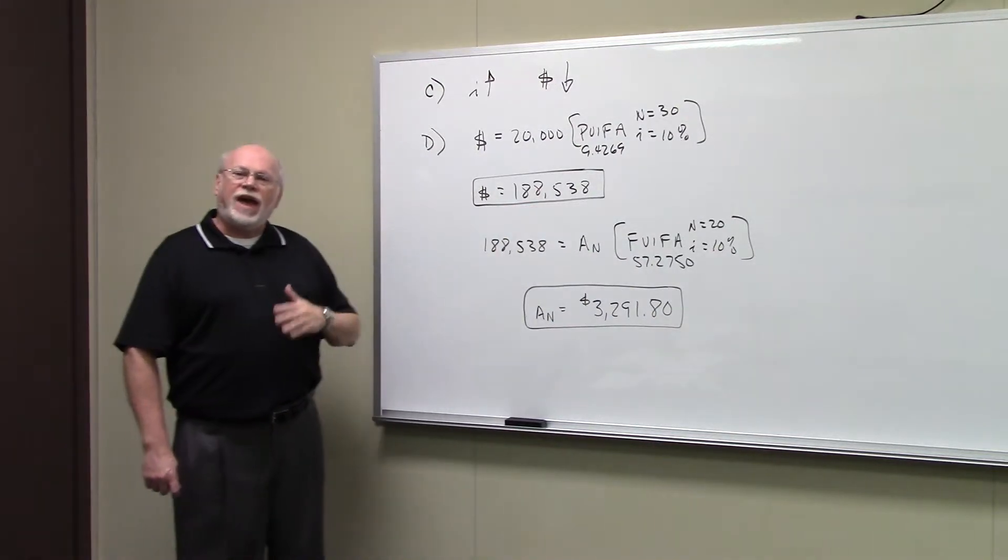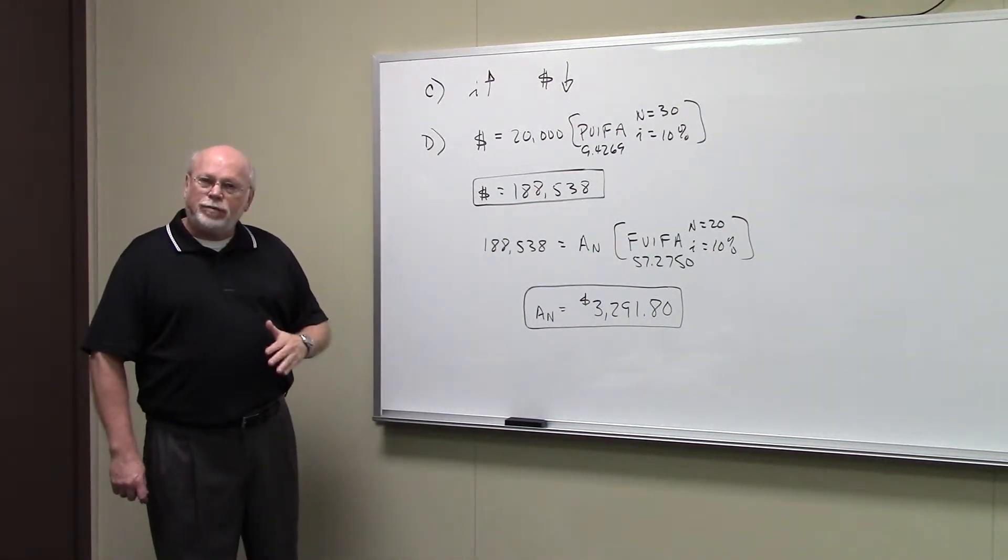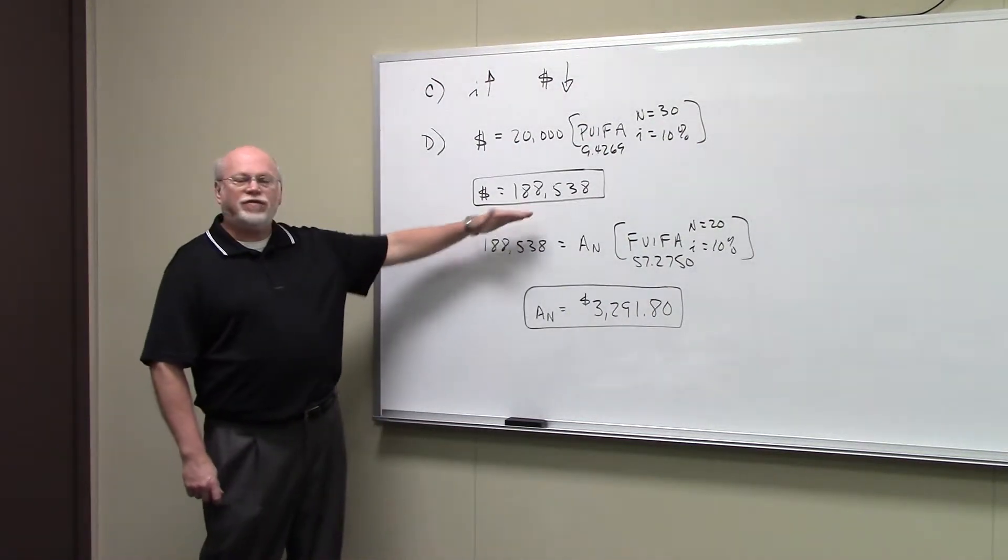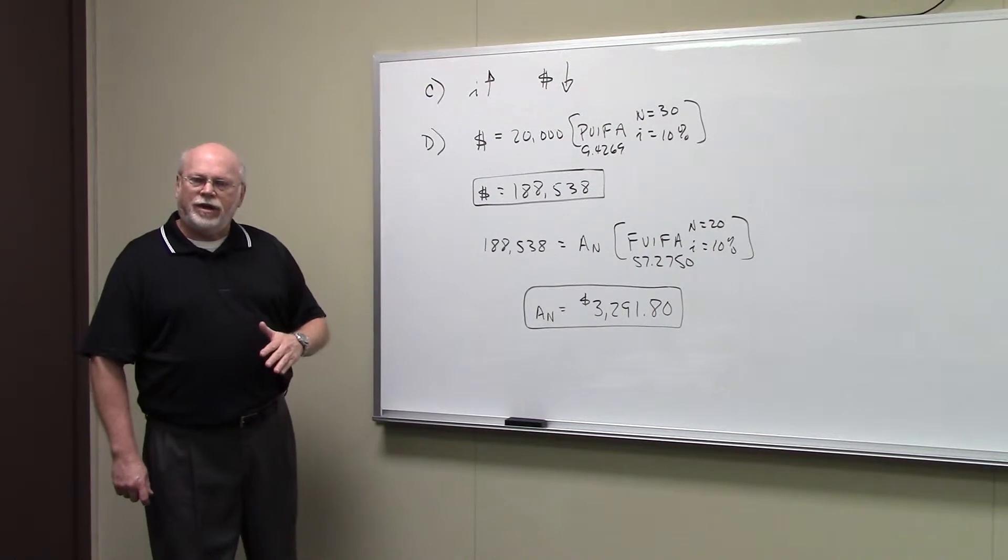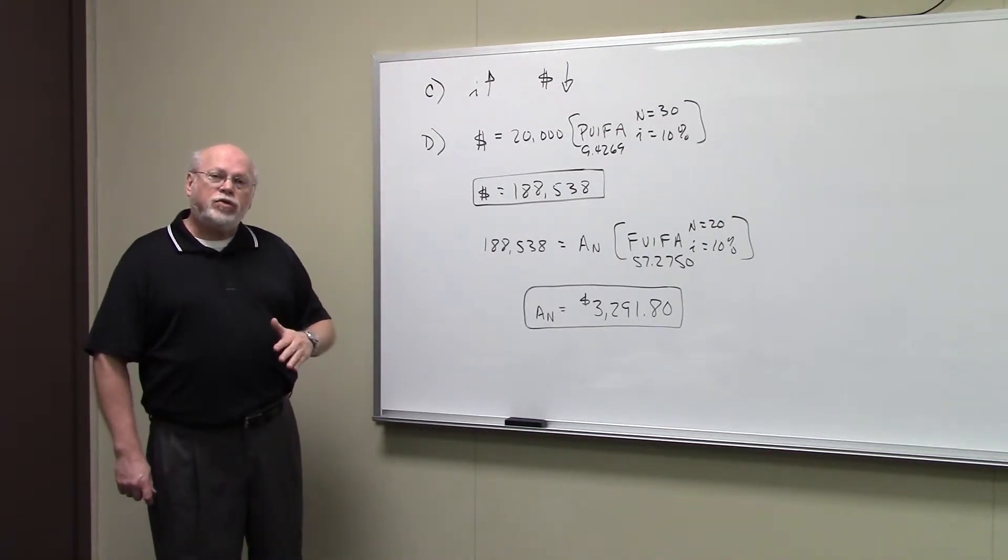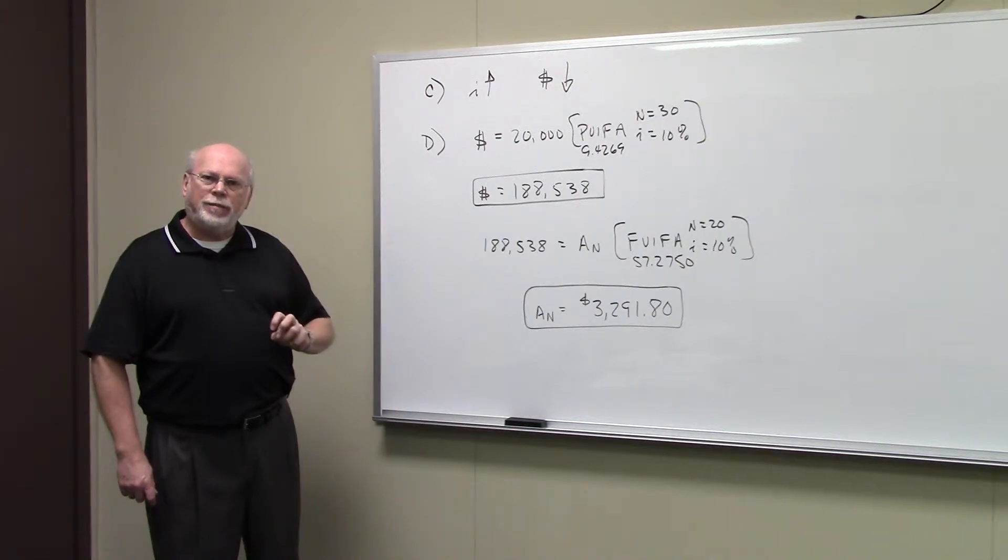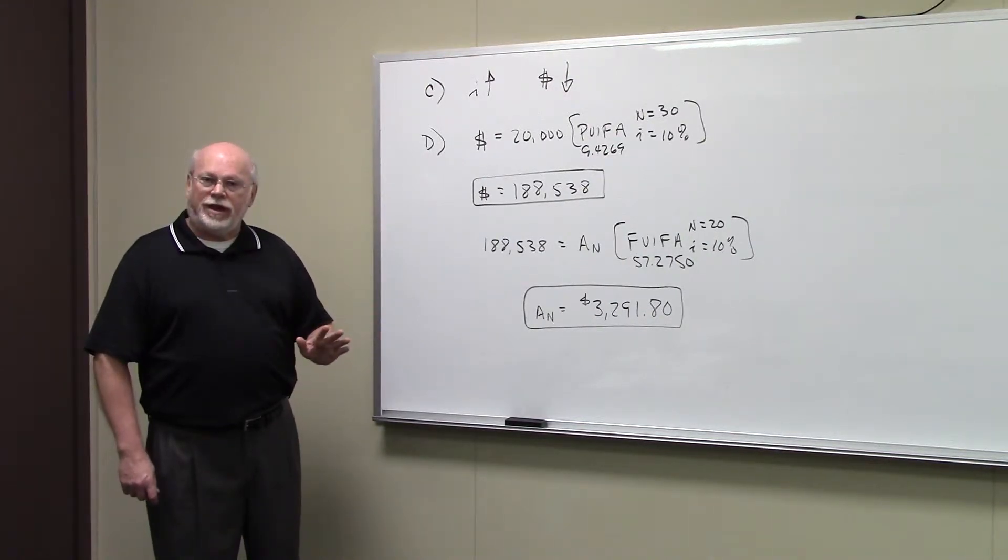So if at retirement we can earn 10% a year on our money, and we have $188,538 in the account, from that account we could withdraw $20,000 a year for 30 years. And at the end of the 30th year, when you take out that last $20,000 payment, there would be nothing left in the account.